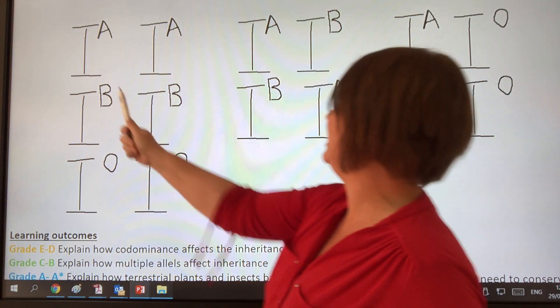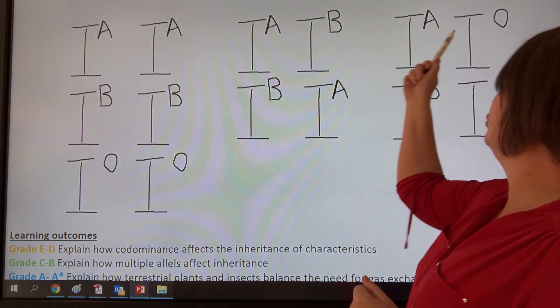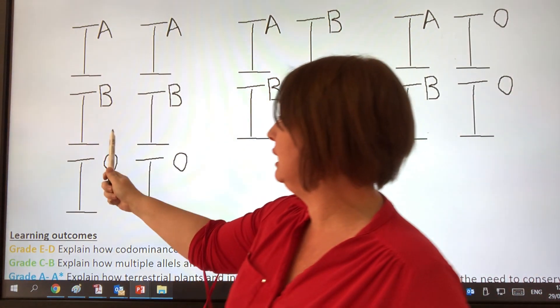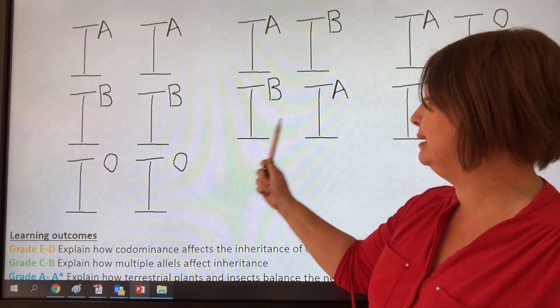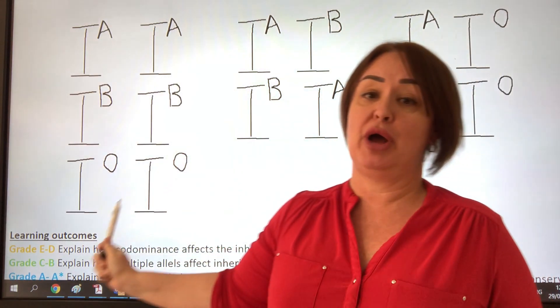Here are the various combinations. We could have blood group A, blood group AB, blood group A, blood group B, blood group AB, blood group B, and blood group O.